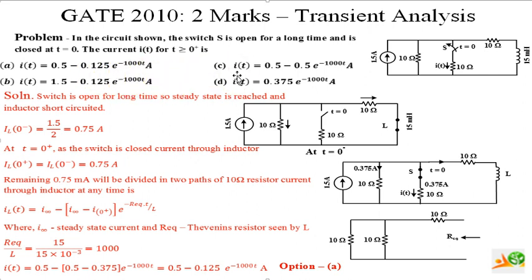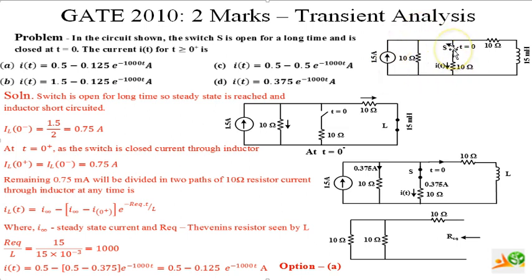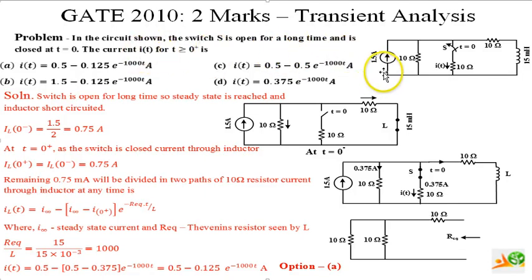For the current through the inductor, we can see this circuit has a 1.5 ampere current source, a 10 ohm resistor, and a branch with the switch open — so there is no current flow in that branch. There is also a 10 ohm branch with a series inductor of 15 millihenrys. We have to find the current i(t) in this part of the branch.